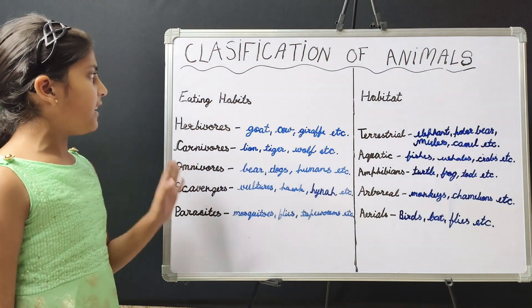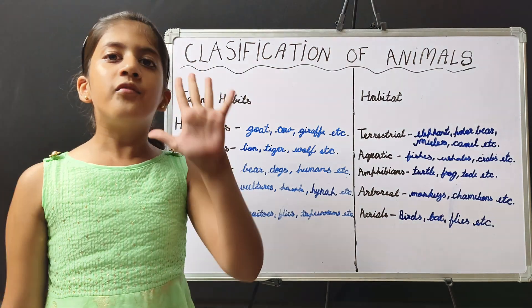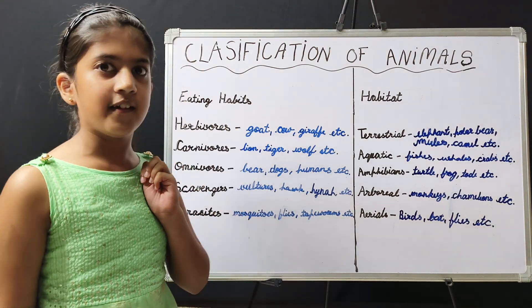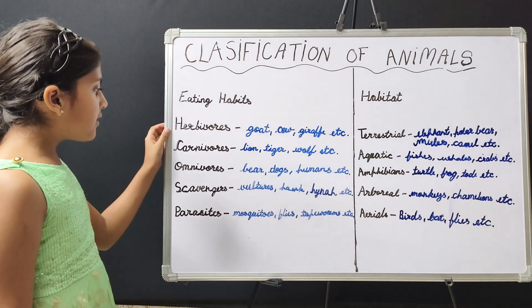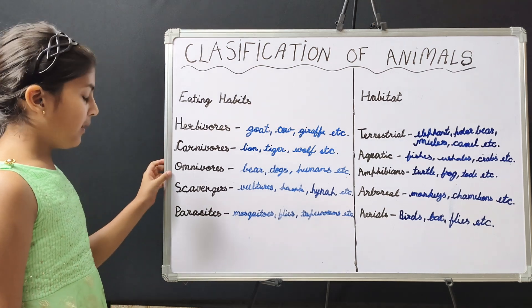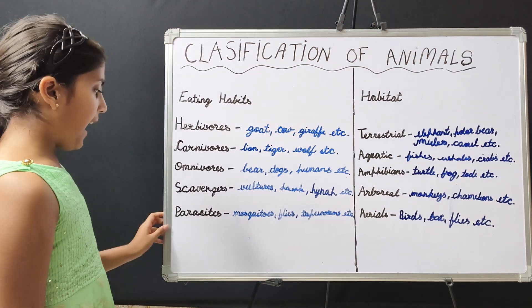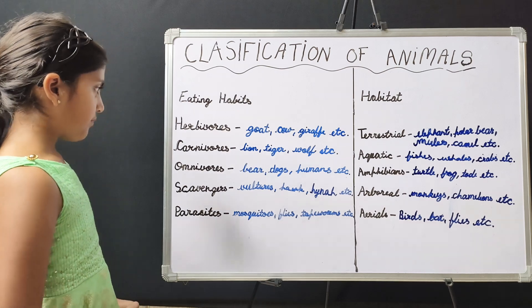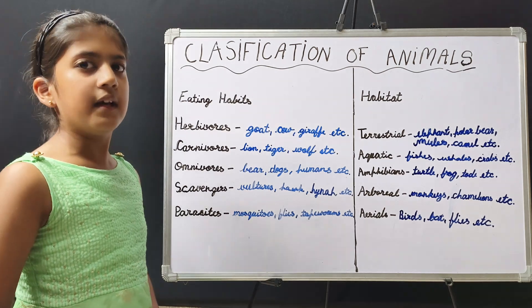According to their eating habits, there are five types of animals: herbivores, carnivores, omnivores, scavengers, and parasites. Let me explain them one by one.